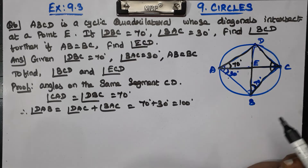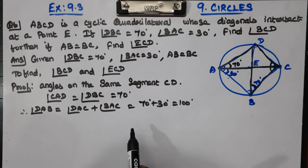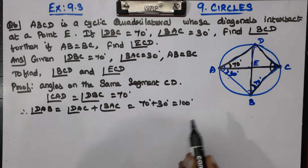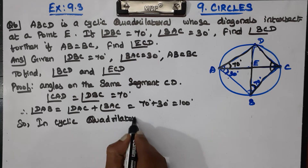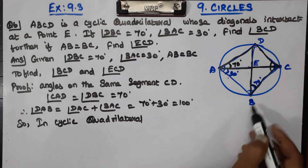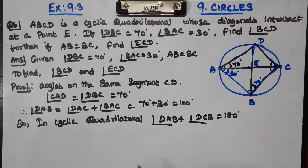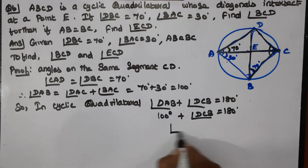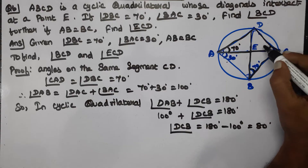In a cyclic quadrilateral, the sum of opposite angles equals 180 degrees. So angle DAB plus angle DCB equals 180 degrees. We have 100 degrees plus angle DCB equals 180 degrees, therefore angle DCB equals 80 degrees.